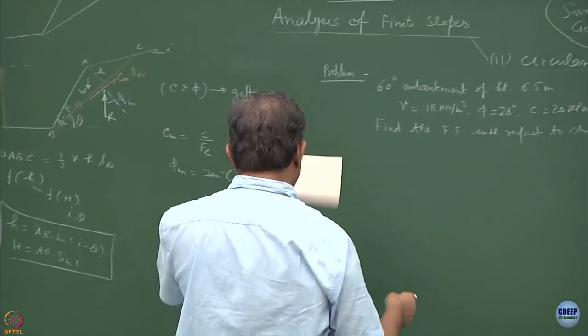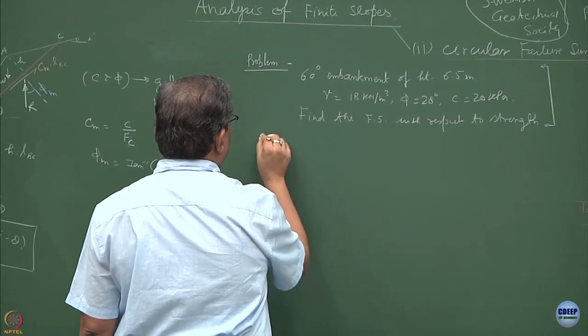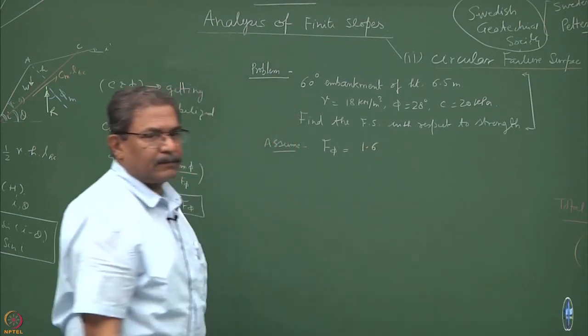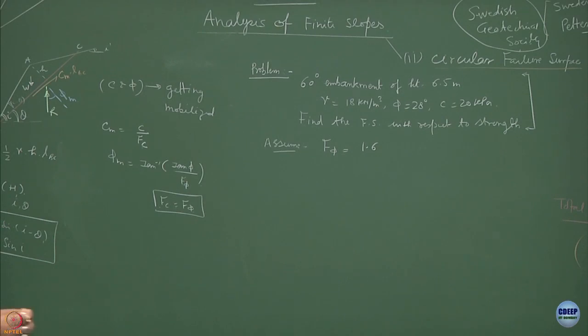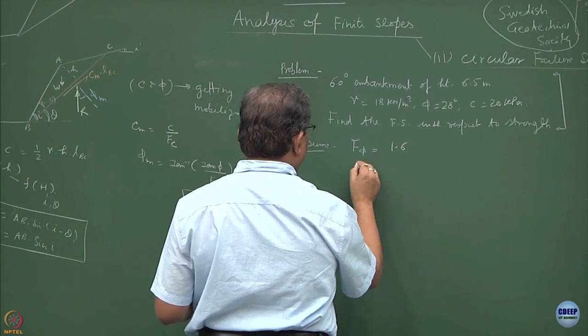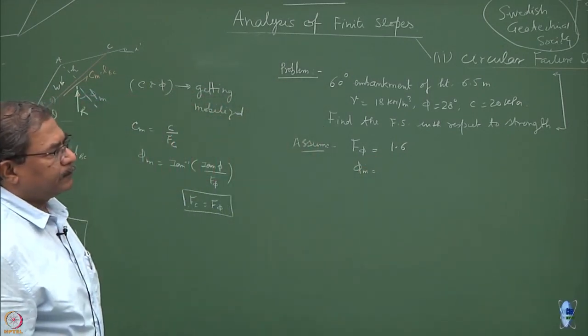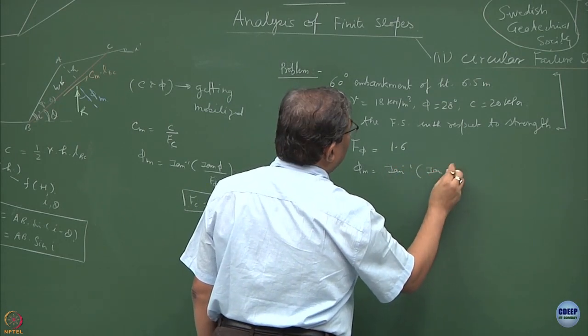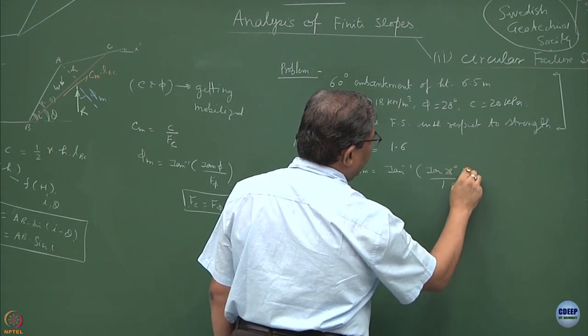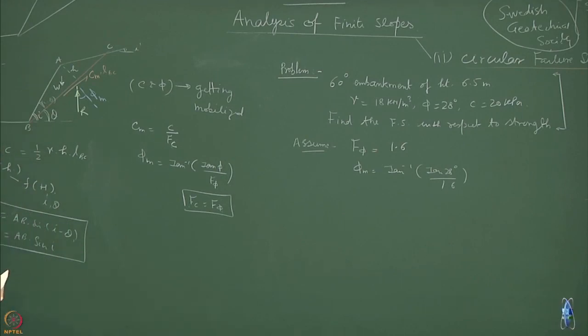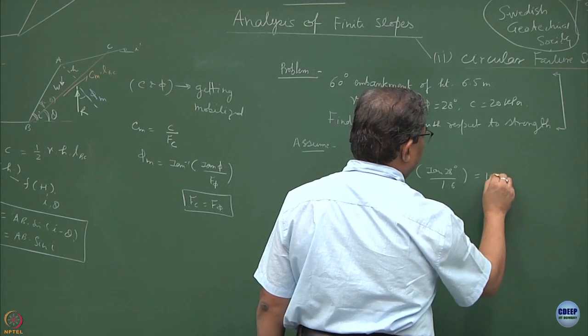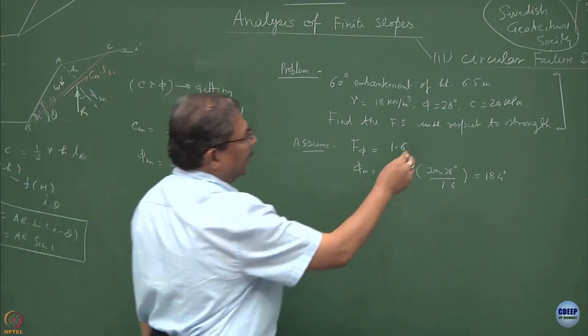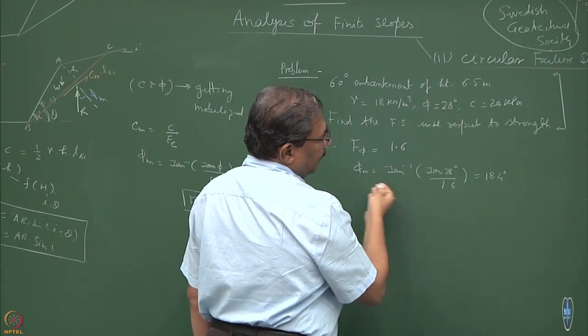The general principle of analysis is like this: we always assume a value of F phi say 1.6, this is the starting point. Once you assume the value of F phi, you can compute phi m as tan inverse of tan 28 degrees divided by 1.6. This comes out to be approximately 18.4. What we have obtained is the value of friction angle which is getting mobilized out of 28 degree friction angle which is available - the mobilized value is only 18.4.